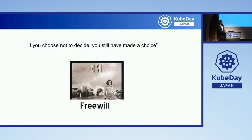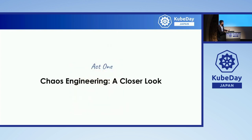If you've decided not to make a choice, you're still making a choice. If you've decided not to adopt chaos, you are still deciding not to go ahead with this practice. By the end of this talk, I hope you rethink and take a closer look at chaos engineering.